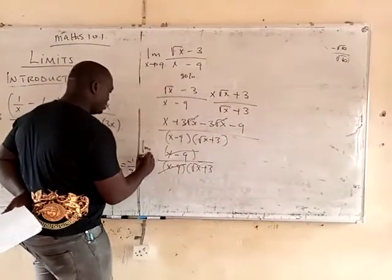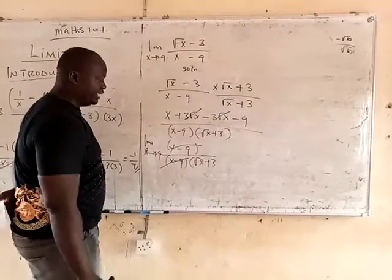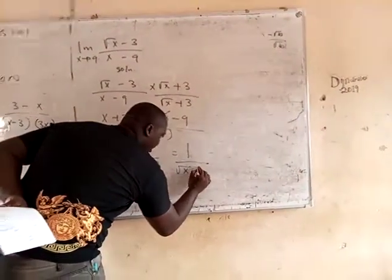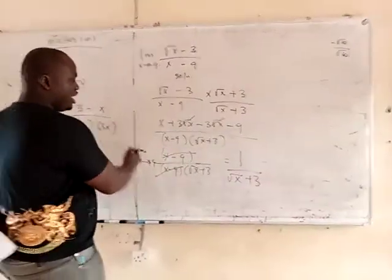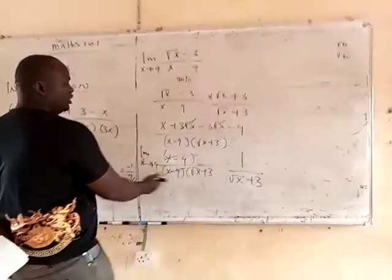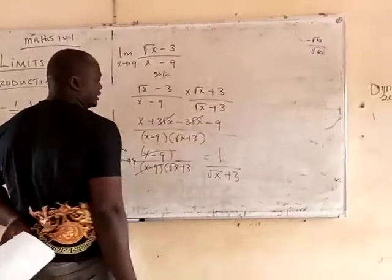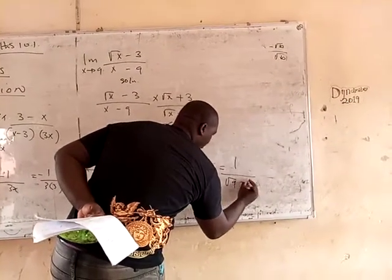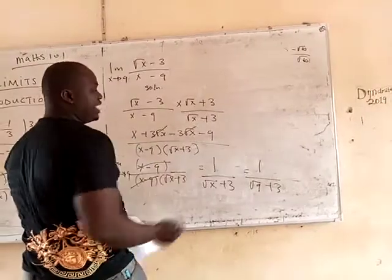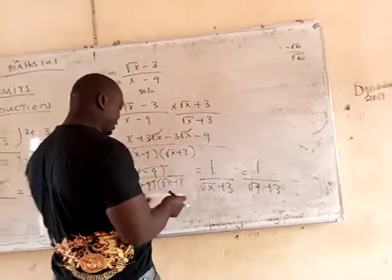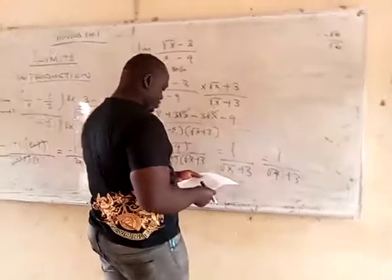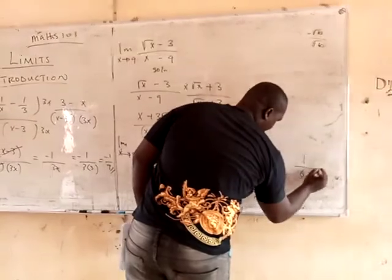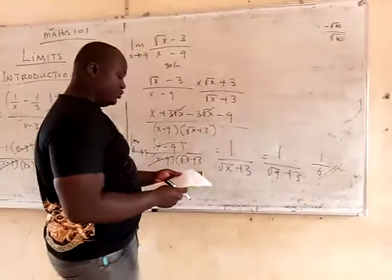Remember, our limit is x equals 9. So you will be left with 1 all over root of x plus 3. All you have to do now — you can see it's simplified. Substitute: wherever you see x, it is 9. So you have 1 all over root of 9 plus 3. Root of 9 gives you 3. So 3 plus 3 gives you 6, and the answer is 1 over 6.